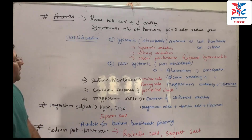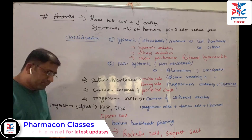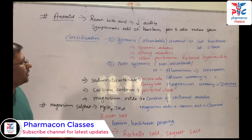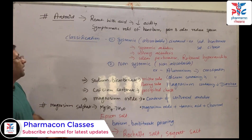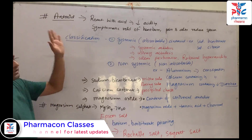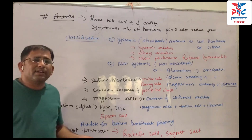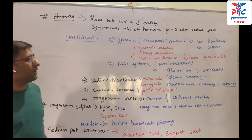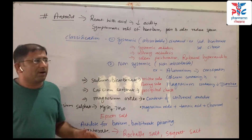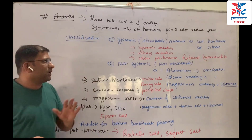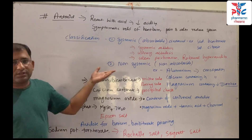Next, we look at the list of important antacids. Antacids react with acid and decrease the acid. This provides symptomatic relief of heartburn, pain, and discomfort. Antacids are classified as systemic and non-systemic.